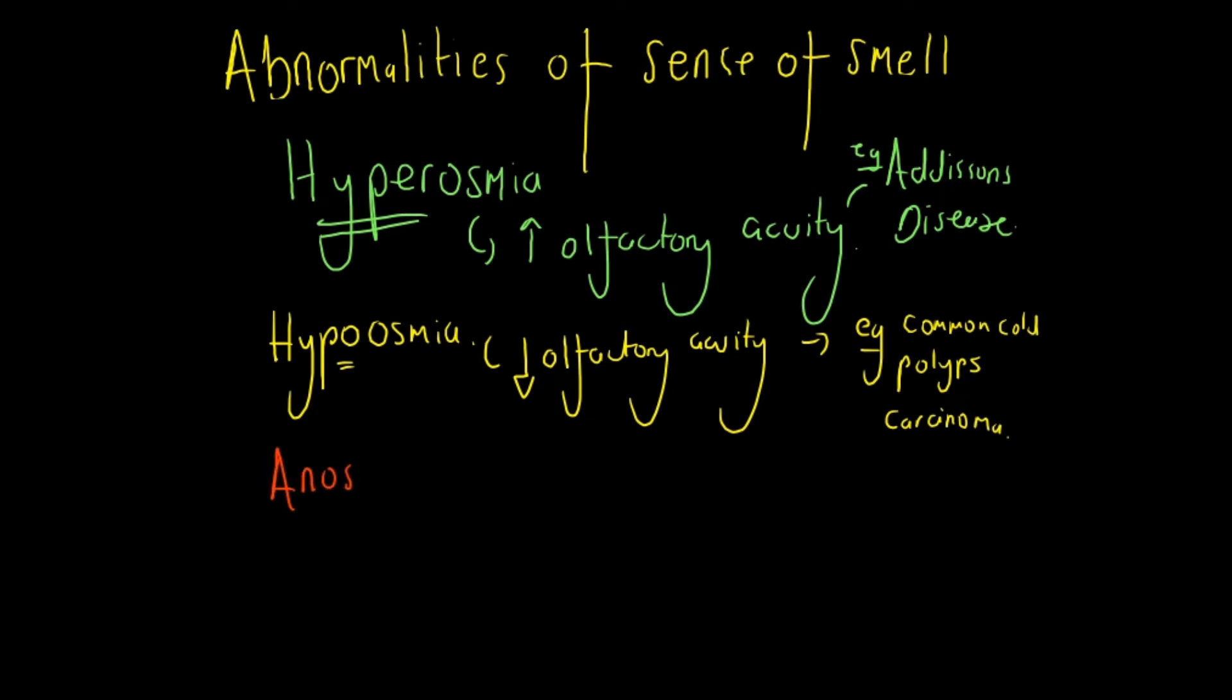The third type is anosmia. This is the inability to recognize odors, and it might be unilateral or bilateral. The patient can usually recognize bilateral anosmia, but unilateral anosmia is usually not perceived.